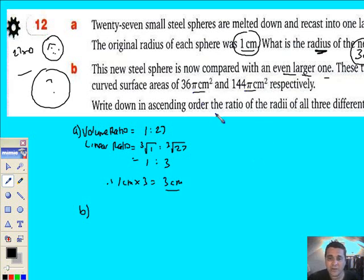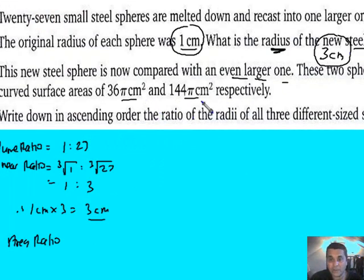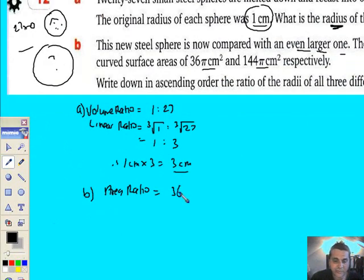So let's work with the area ratio they've given us. And then we'll worry about putting the ratio in ascending order. So area ratio first, in dealing with the middle sized one and the even bigger one. Area ratio is going to be 36π compared to 144π.